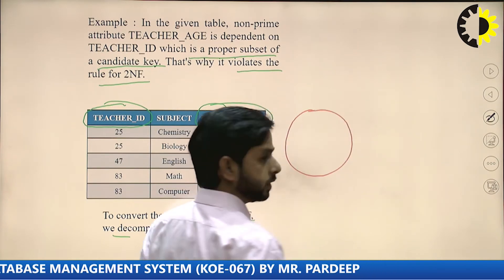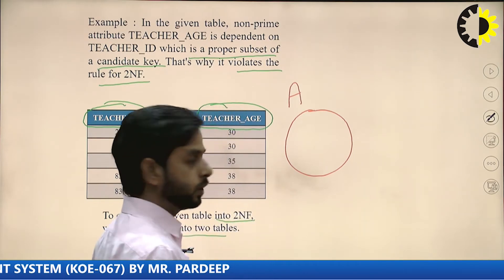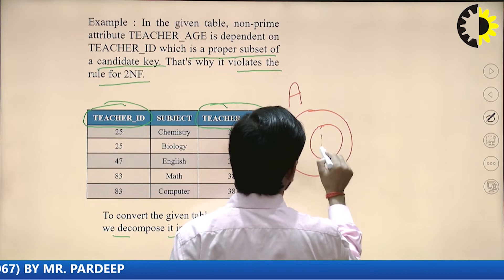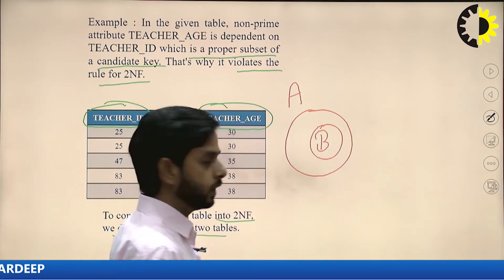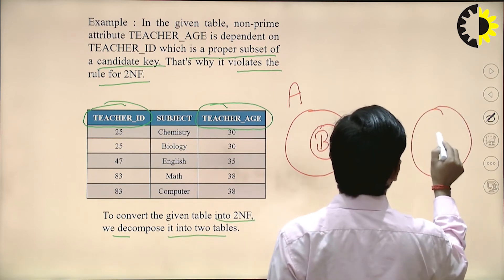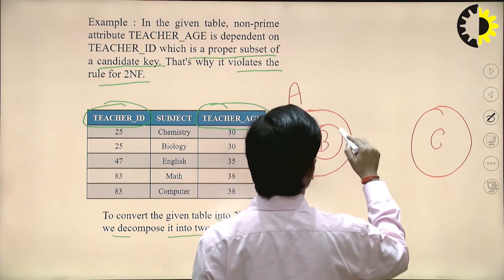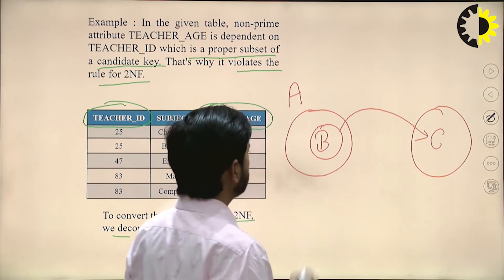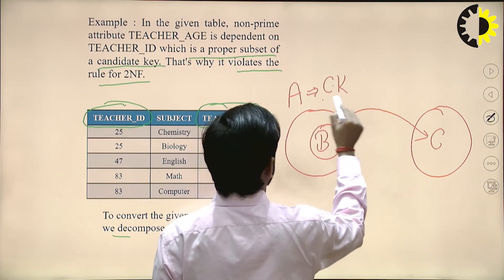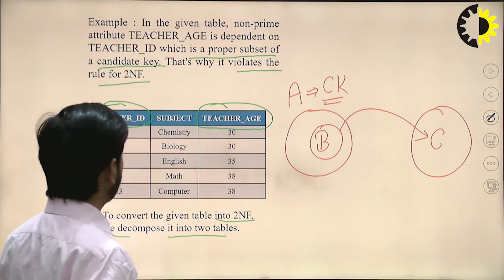Suppose there is some set of attributes A and V is a subset of A that determines C — this is a partial dependency on C. If A is the candidate key, this is not allowed in 2NF.